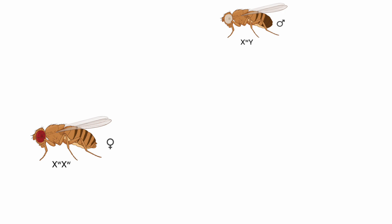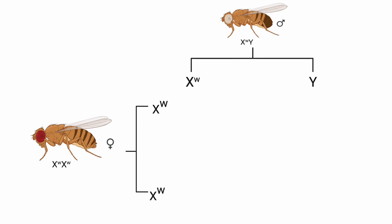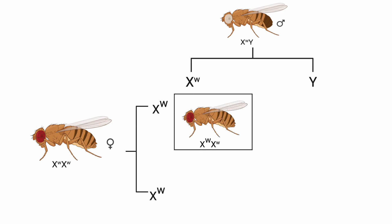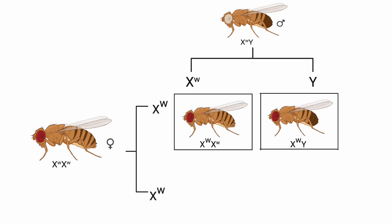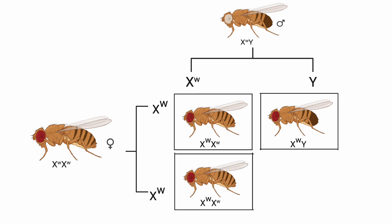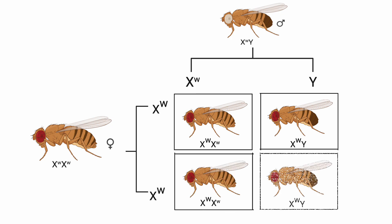In the reciprocal cross, the genotypes are flipped: a white-eyed female, X^w X^w, and a red-eyed male, X^W Y. Now let's see what happens when we cross these flies. The Punnett Square helps us predict the possible combinations of chromosomes in the offspring.